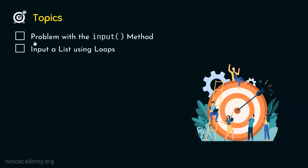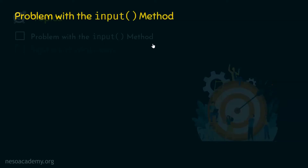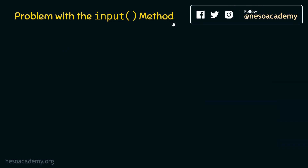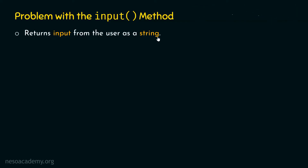Let's first understand what is the problem with the input method. The input method has the capability to receive user input, but it always returns that input as a string. It will never return an integer or any other data type — it always returns input as a string.